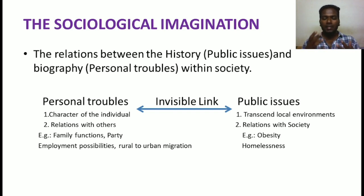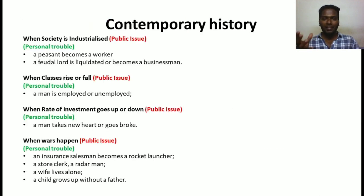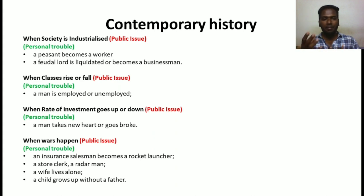Sociological imagination helps us understand how personal troubles lead to public issues. For example, in contemporary history, when there is industrialization, a person becomes a worker and a feudal lord becomes a businessman. Becoming a worker or a businessman is a personal trouble of the individual caused by the public issue of industrialization.